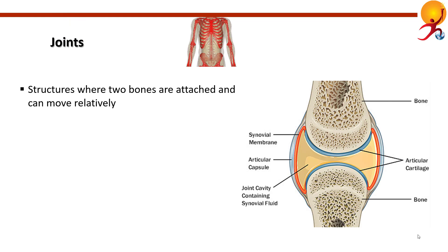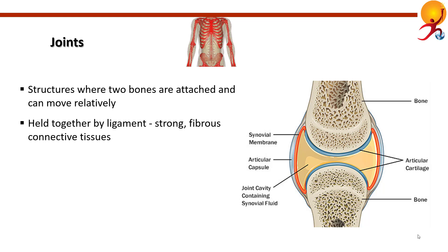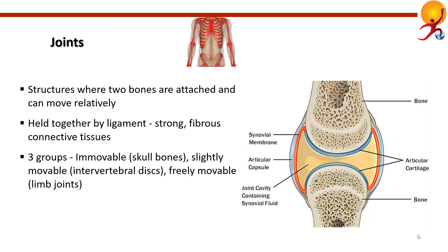Joints are structures where two bones are attached so that they can move relative to each other. Bones are held together at joints by ligaments, which are fibrous connective tissues. Joints are classified into three groups: immovable or fibrous joints (e.g., skull bones), slightly movable or cartilaginous joints (e.g., intervertebral discs), and freely movable or synovial joints (e.g., limb joints). Synovial joints permit the greatest degree of flexibility and have bone ends covered with a synovial membrane filled with synovial fluid.